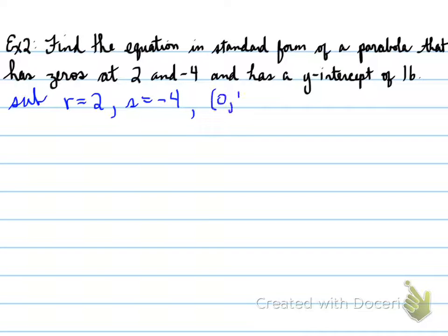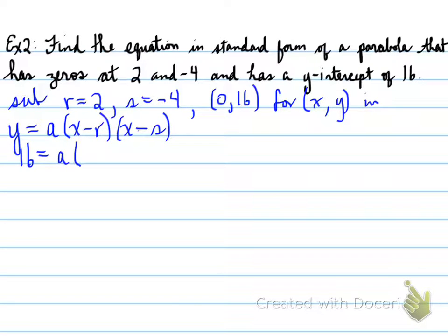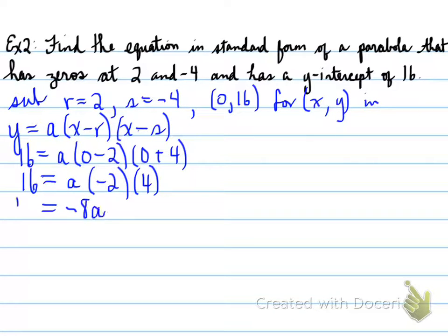Sub in r for 2, s for negative 4, and the y-intercept 0, 16 for x and y into the equation, y equals a, x minus r times x minus s, and we plug in the values. So, y is 16, is equal to a, 0 minus 2, 0 minus 4, which is 0 plus 4, and we're going to find the value of a. So, it will equal, negative 8a will equal 16, and that will give us a value of negative 2.